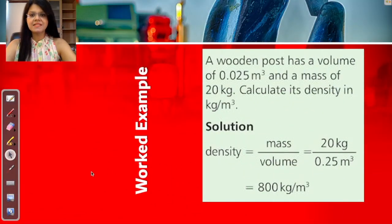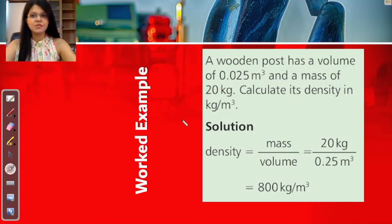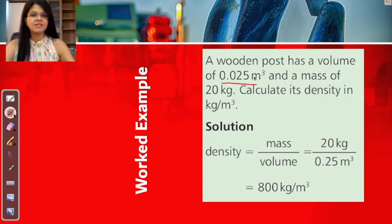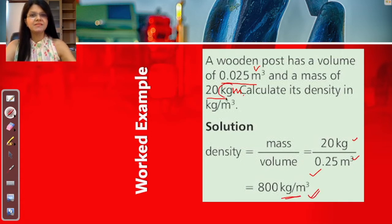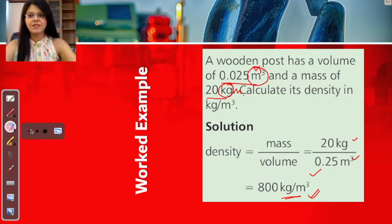Let us answer this question. A wooden post has a volume and a mass given to you. Calculate the density — it is a simple application of the formula: mass over volume. The unit comes from kg for mass and meter cubed for volume, giving kg per meter cubed.